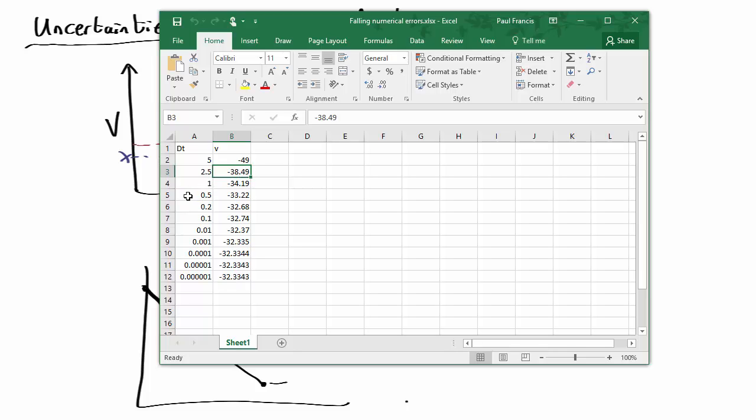If I then change delta t to half, so that takes us ten steps to get there, it only changes from 34 to 33. If I drop it down to 0.2, 32.68. 0.1 which is what we actually used, it's minus 32.74. So now it's all getting pretty close. It looks like the answer is somewhere about minus 32, and as you get smaller and smaller, it's not making much difference.